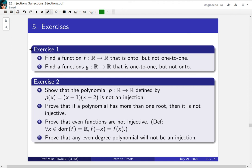Your first exercise is to find a function f from the reals to the reals that is onto but not one-to-one, and then find a function g from the reals to the reals that is one-to-one but not onto.